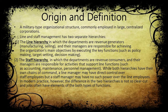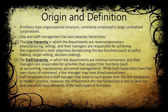While both hierarchies have their own chain of command — in line hierarchy: general manager, production manager, supervisor, foreman, and worker; in staff hierarchy: general manager, manager accounts, and accounting clerks — a line manager may have direct control over staff employees. But staff managers may not have authority over line employees. Line employees have control over staff employees, but not the reverse.